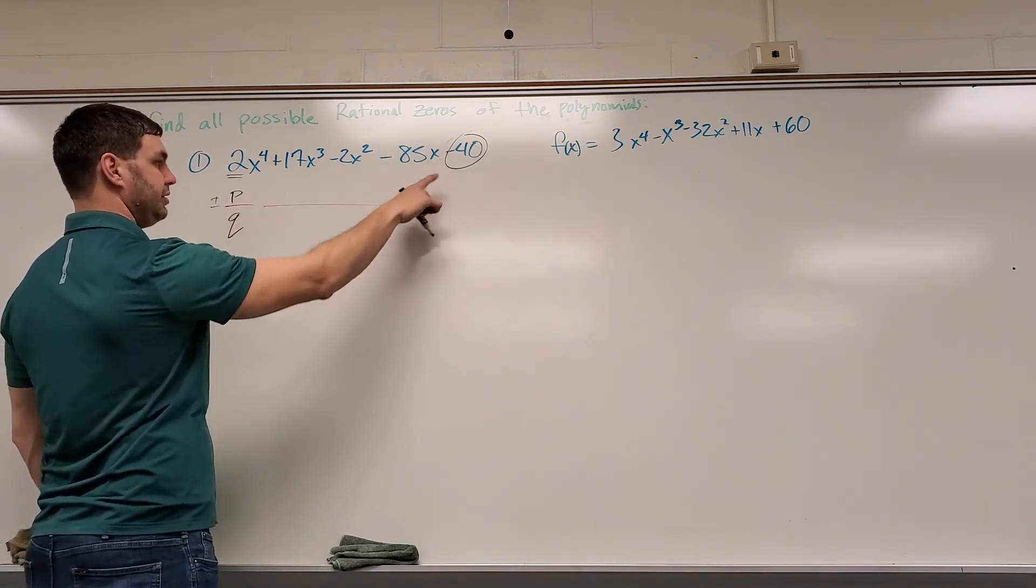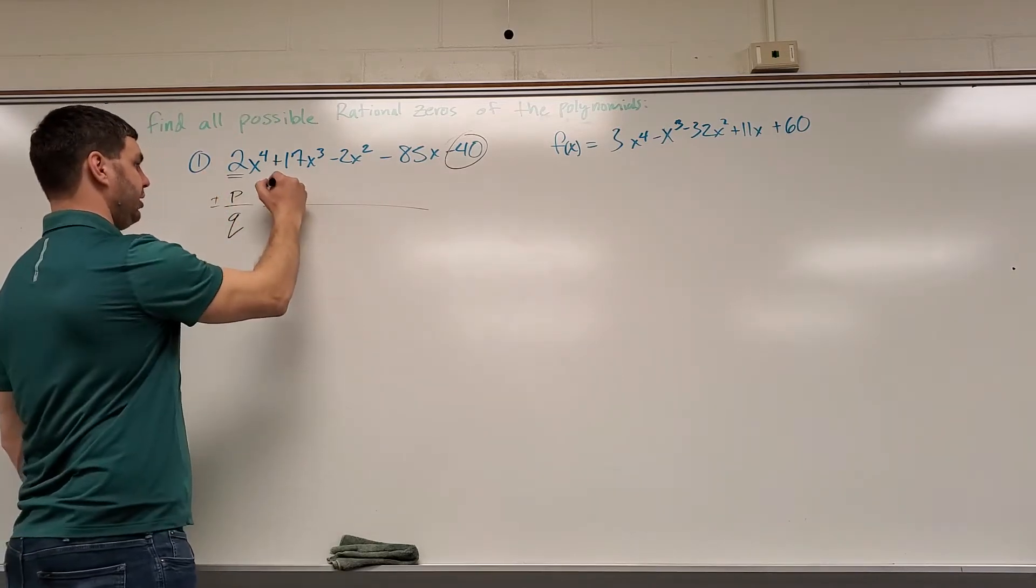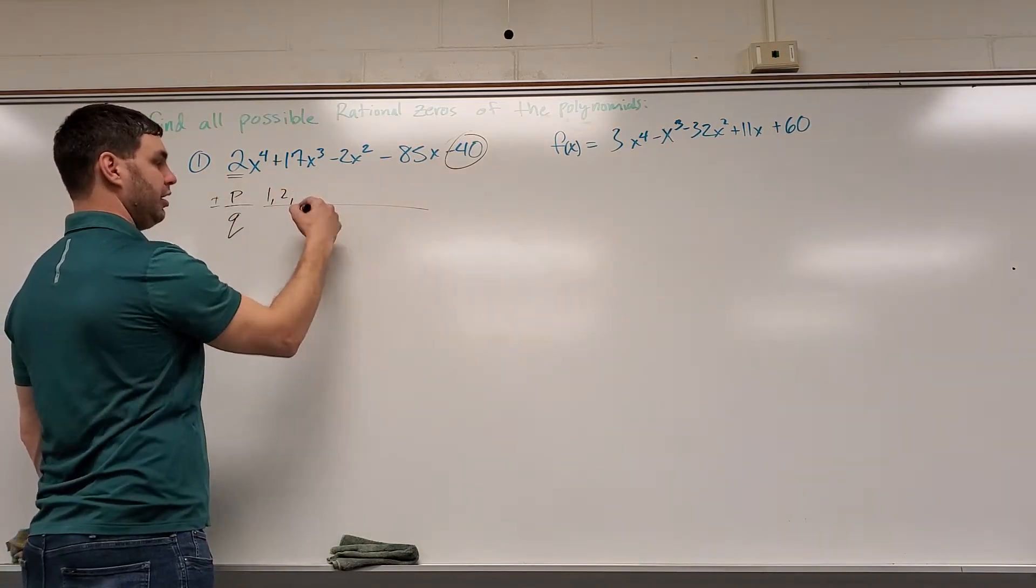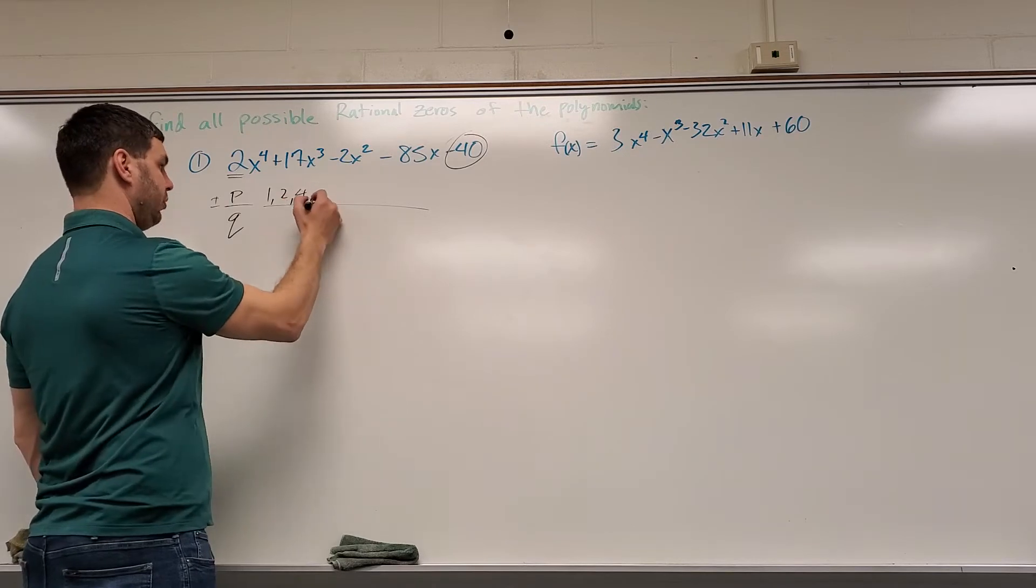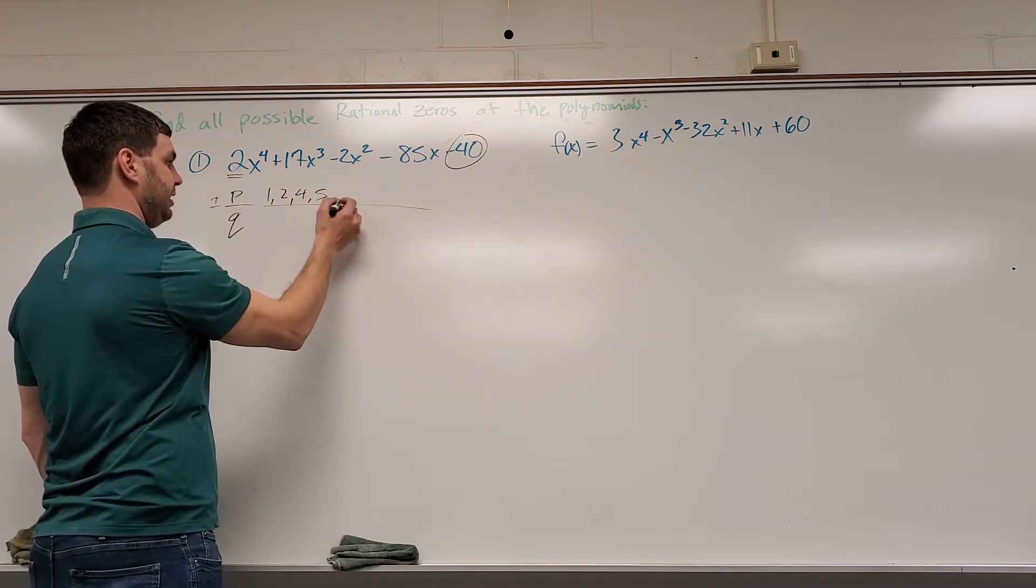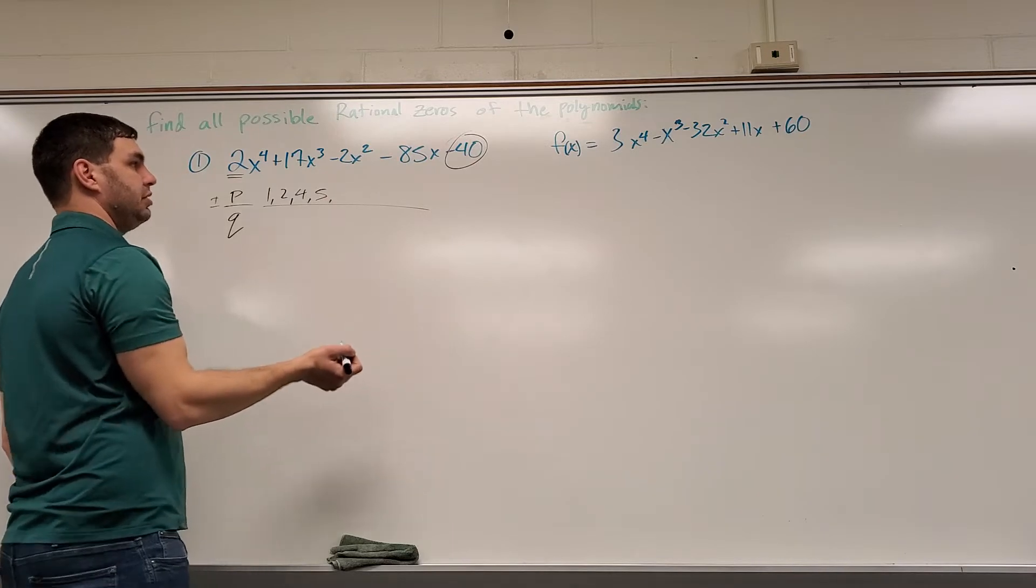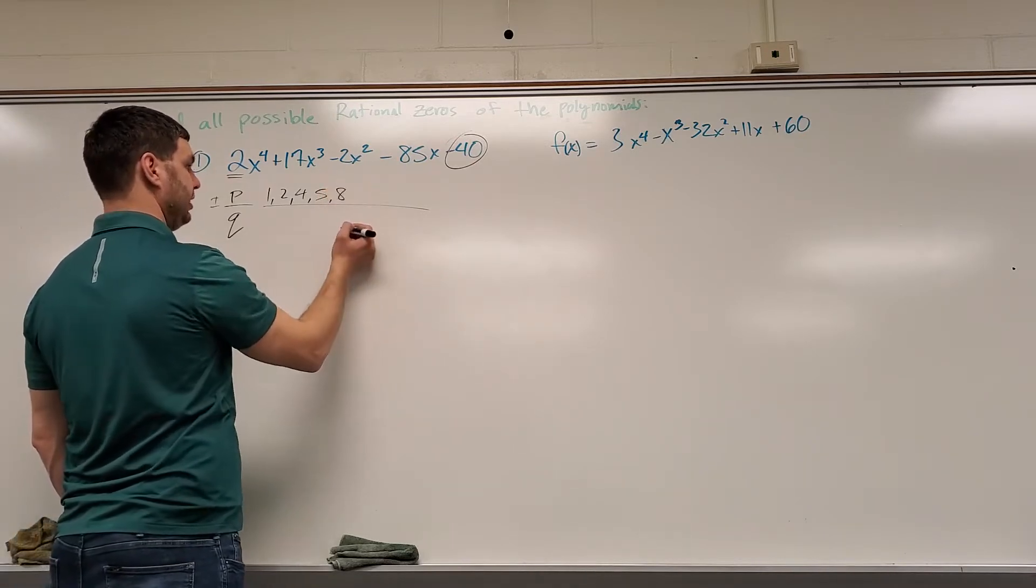All my p's could be, well if I think of 40, factors of 40, we have 1, 2, 3 doesn't go into 40, 4 does though, 5 does, 6 no, 7 no, 8 does.